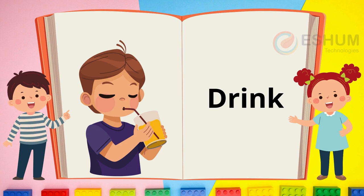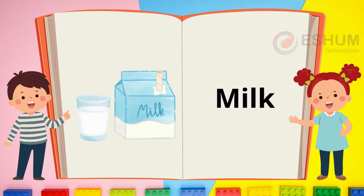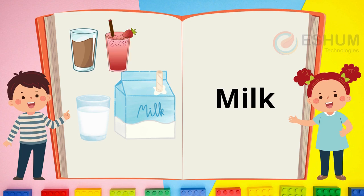In the picture, milk is in the glass and in the carton. The white stuff in the glass is milk. It comes from a cow. Some milk is a different color — chocolate milk is brown, strawberry milk is pink.